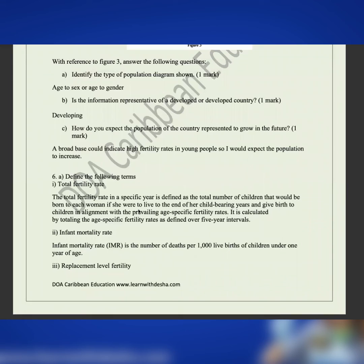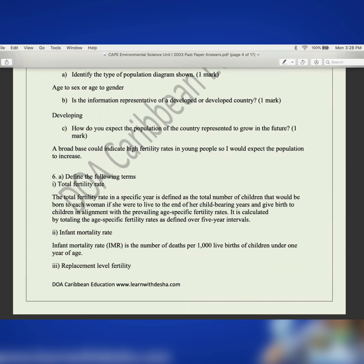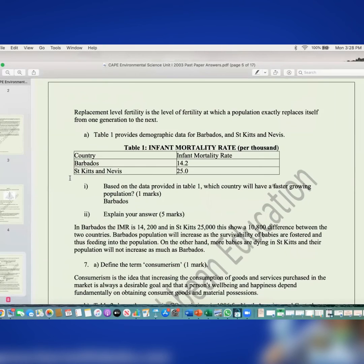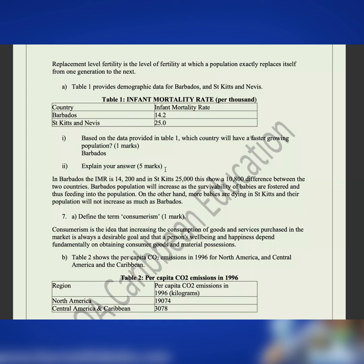Number six: define the following terms. Total fertility rate is the total number of children that would be born to each woman if she were to live to the end of her childbearing years and give birth in alignment with the prevailing age-specific fertility rates. Infant mortality rate is the number of deaths per 1,000 live births of children under one year of age. Replacement level fertility is the level of fertility at which a population exactly replaces itself from one generation to the next.